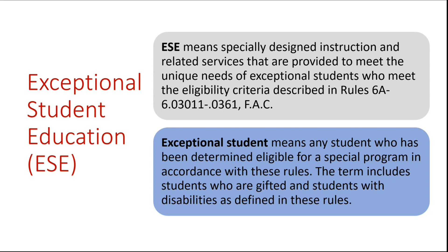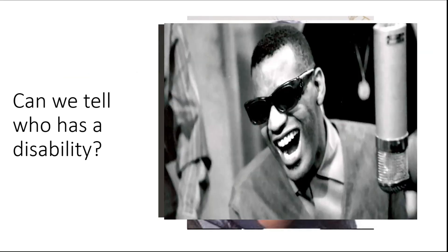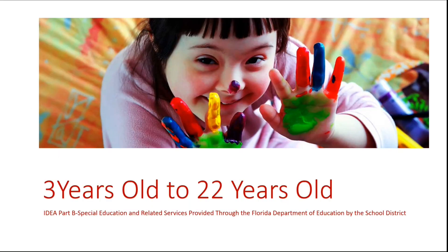The terms include students who are gifted and students with disabilities as defined in these rules. For this training, we will focus on IDEA Part B, which deals with children ages three years to 22 years old.